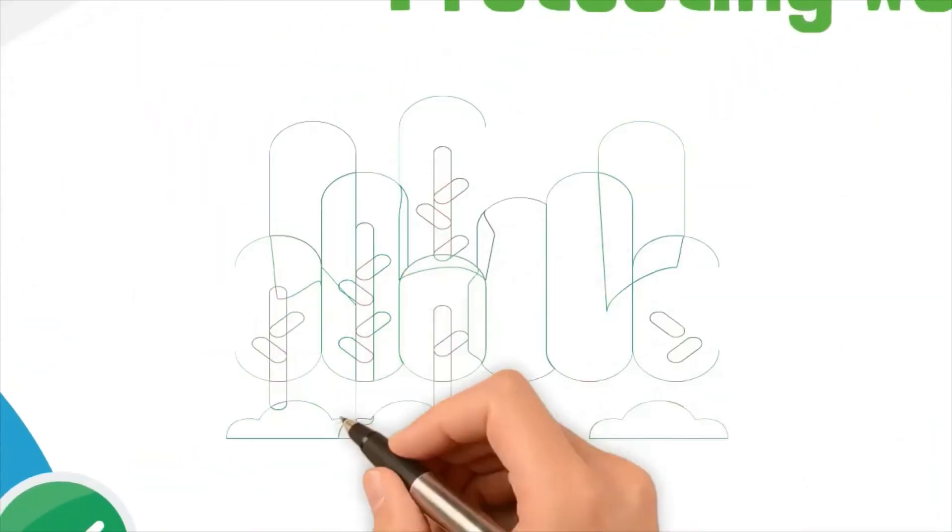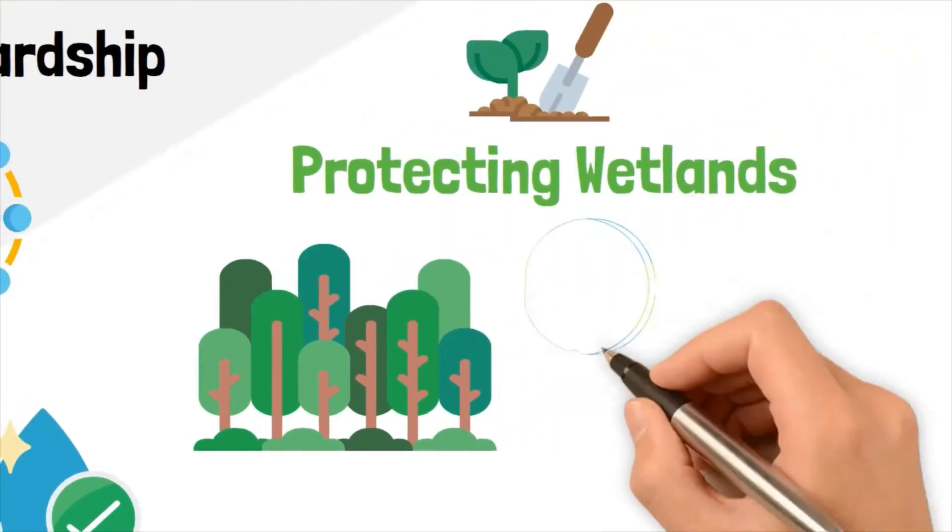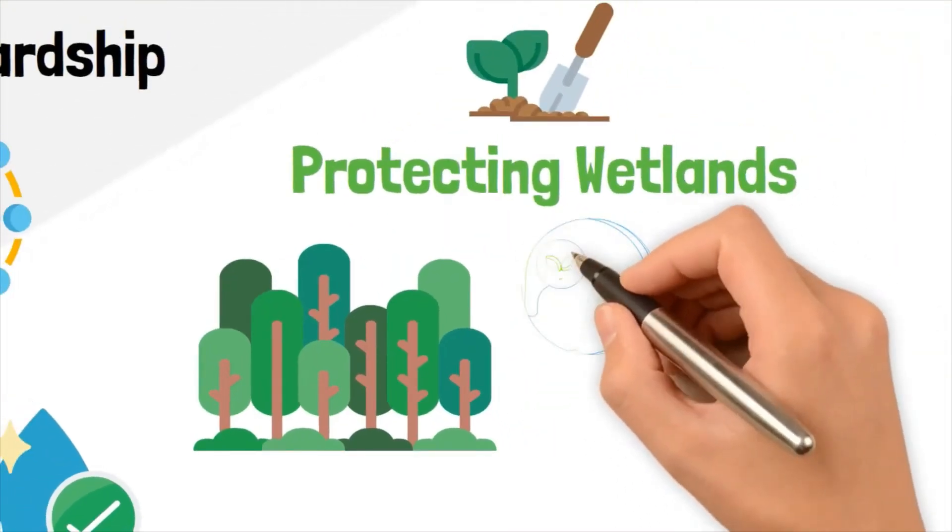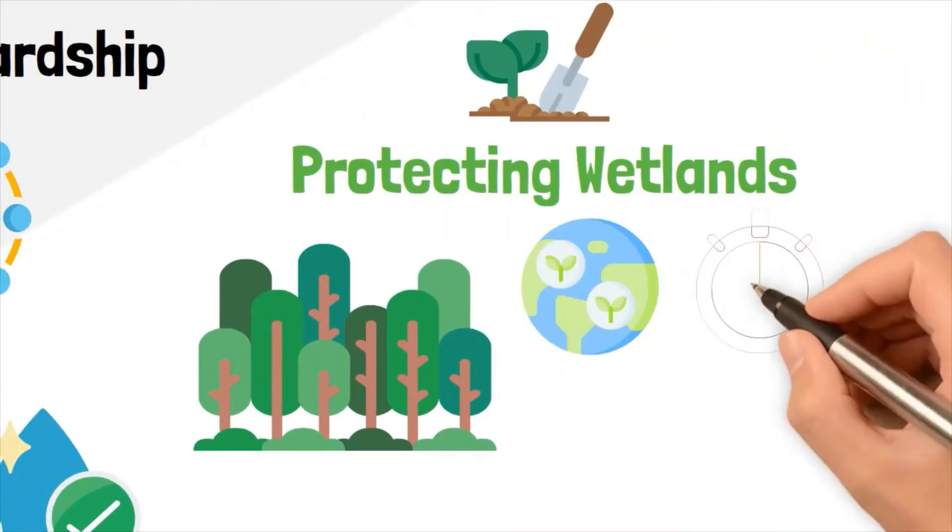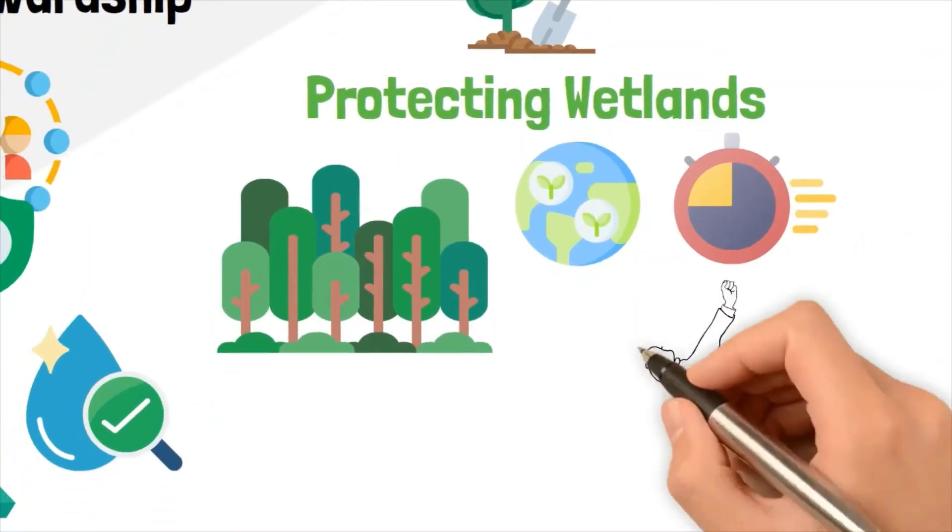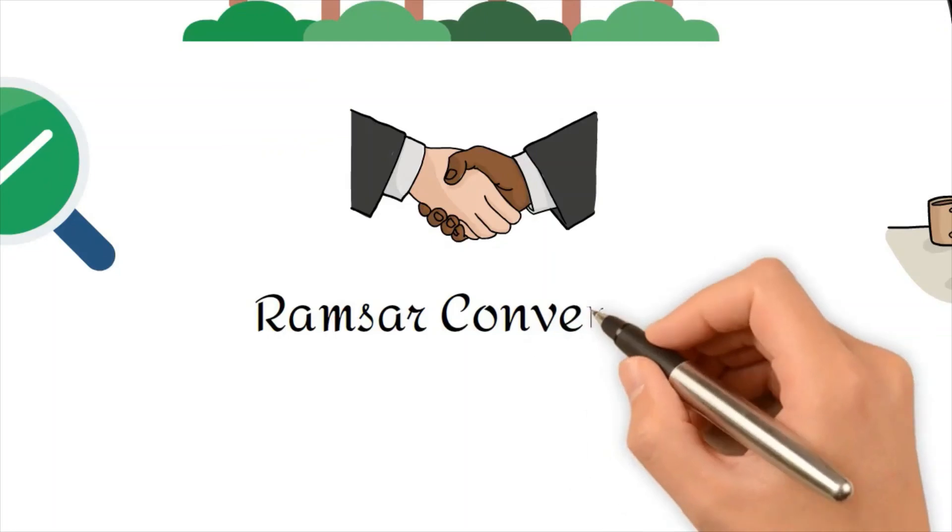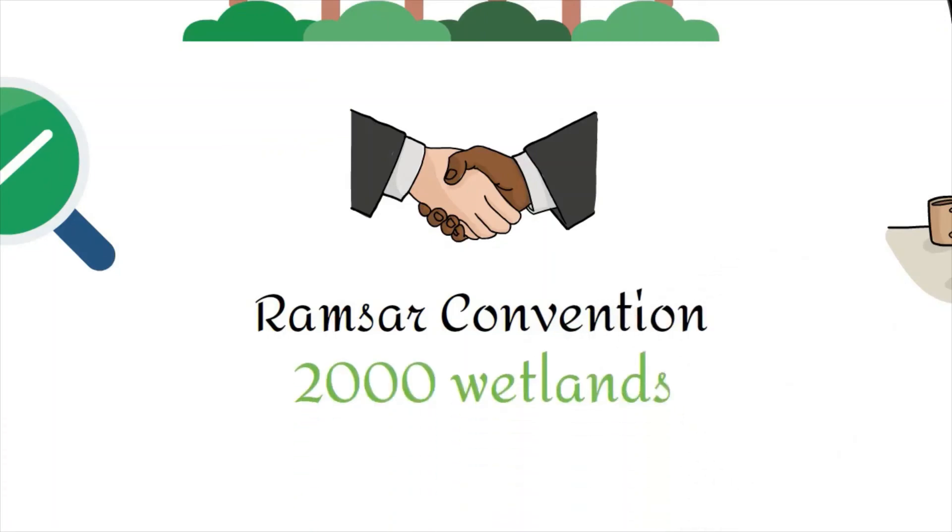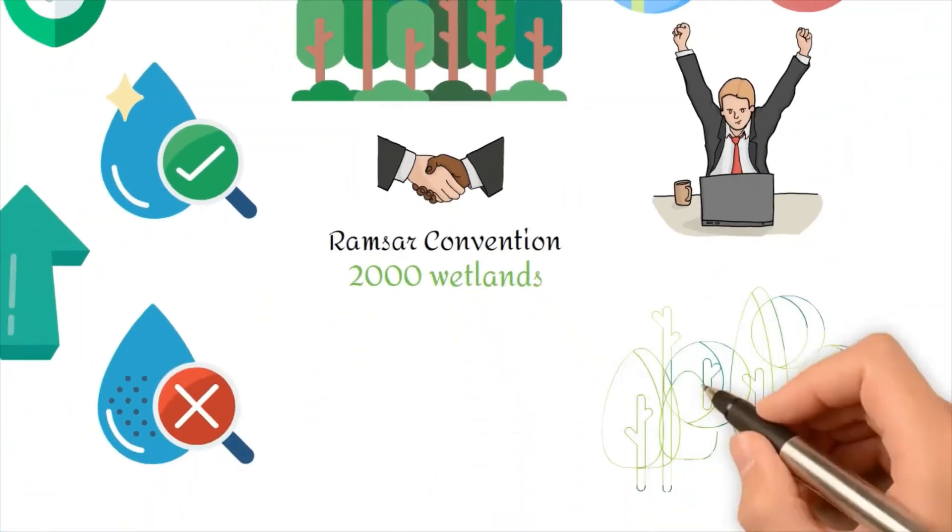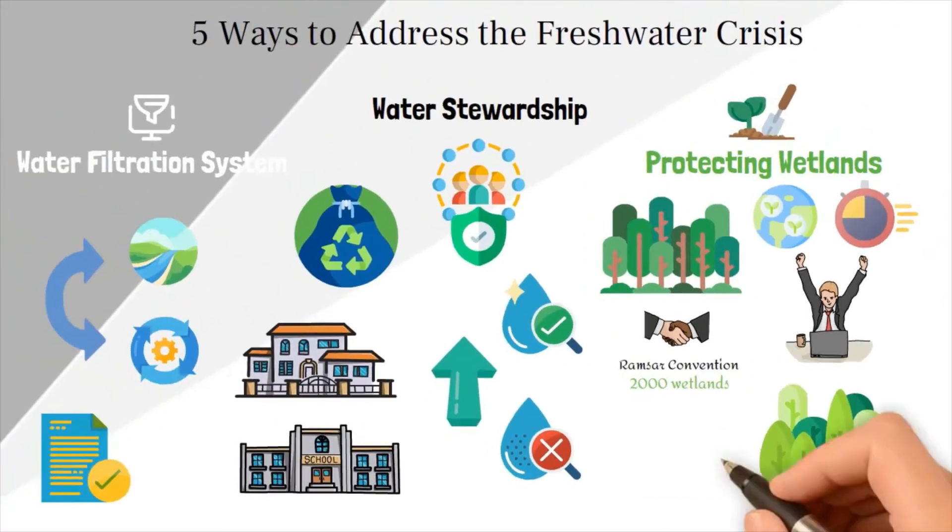3. Protecting wetlands: Remember when we mentioned that wetlands are natural water filtration systems? Well, that means they have a big role in collecting and purifying water. Wetlands are disappearing at an alarming rate, but conserving wetlands could have a major payoff. Currently, an international treaty called the Ramsar Convention has helped protect more than 2,000 wetlands. More aggressive conservation measures are required if we want wetlands to assist our efforts to reduce water scarcity.